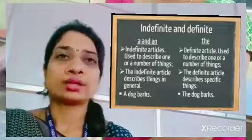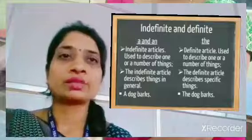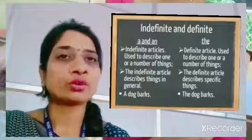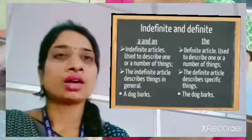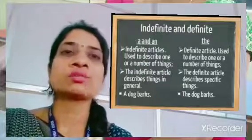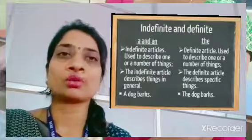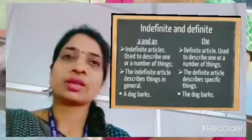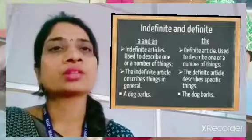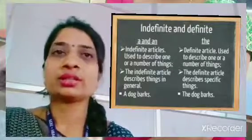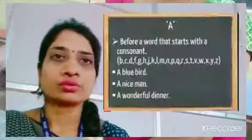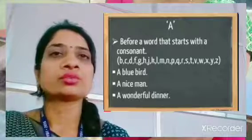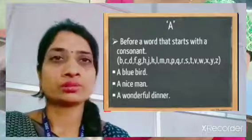For example: 'A dog barks' and 'The dog barks.' When we say 'a dog barks,' we are talking about a dog in general. When we say 'the dog barks,' we are talking about a particular dog. So that is the difference — 'a' for general, 'the' for specific.